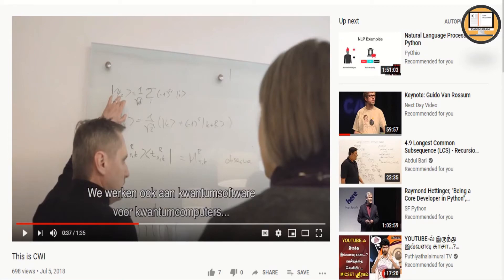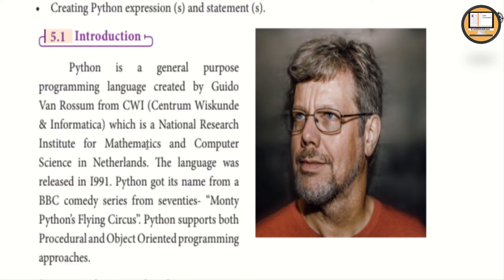Python was developed in 1991. The name Python comes from the BBC Comedy Series from the 70s — Monty Python's Flying Circus. That is why Guido van Rossum named the programming language Python.